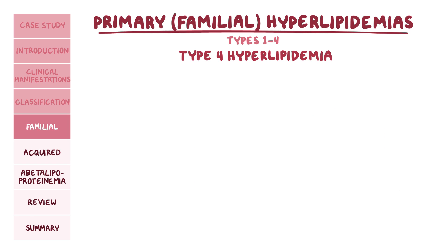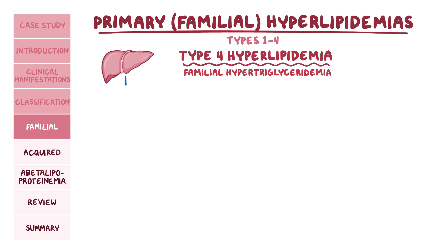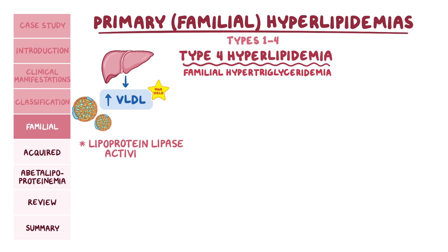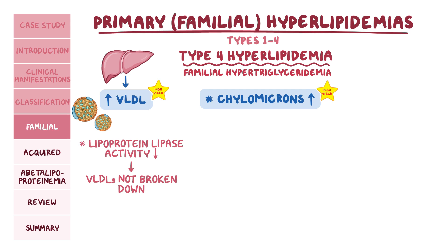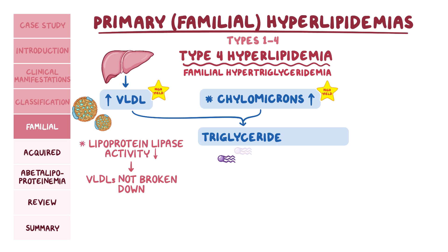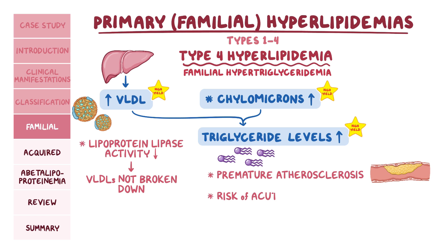Type 4 familial hyperlipidemia is also known as familial hypertriglyceridemia. For some unknown reason, the liver pumps out large amounts of VLDL. In addition, lipoprotein lipase activity is decreased, so VLDLs are not broken down. This also applies to chylomicrons, which will also be elevated. The high yield concept here is that since VLDLs and chylomicrons both contain mainly triglyceride, serum triglyceride levels can increase dramatically. This condition is characterized by premature atherosclerosis and the risk of developing acute pancreatitis.